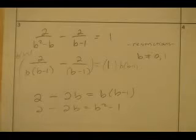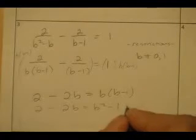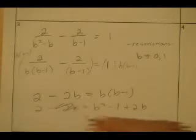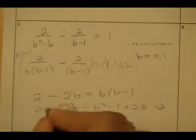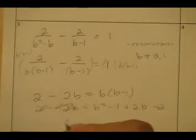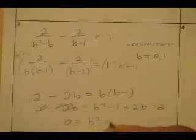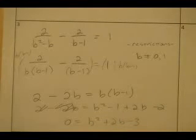Subtract b squared, add 2b to both sides, subtract 2 from both sides. I get 0 equals b squared plus 2b minus 3.